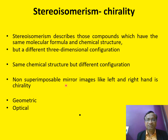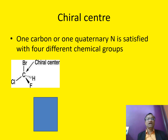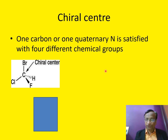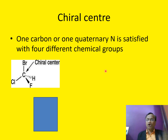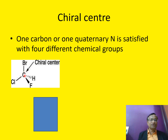Non-superimposable mirror images — like the left and right hand — represent chirality. The mirror images cannot be superimposed. Chirality means the carbon or quaternary nitrogen is satisfied by four different groups. Carbon has four valencies, and all four should be satisfied by a different atom — that is what is called a chiral center or chiral carbon. For example, this is a chiral carbon because one substituent is bromine, one is hydrogen, one is fluorine, and one is chloride.